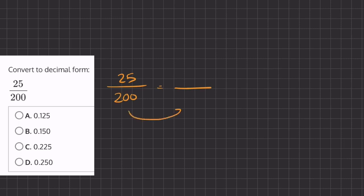So to turn 200, we can turn it to 100. We can divide by 2, but this 25 is not quite divisible by 2. So we can also just multiply by 5 and it will turn this 200 into 1,000.